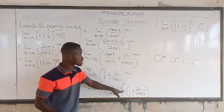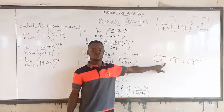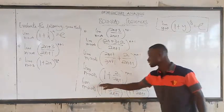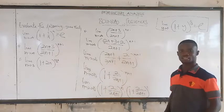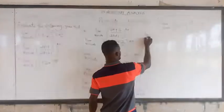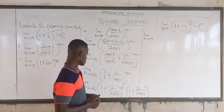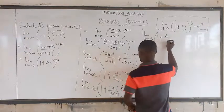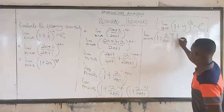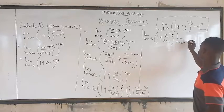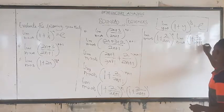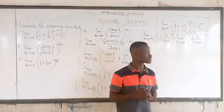This is the same expression from our rules of indices. So we can take the limit term by term. Here we get the limit as n approaches infinity of (1 + 2/(2n+1)) to the power n, times the limit as n approaches infinity of (1 + 2/(2n+1)) to the power 1.